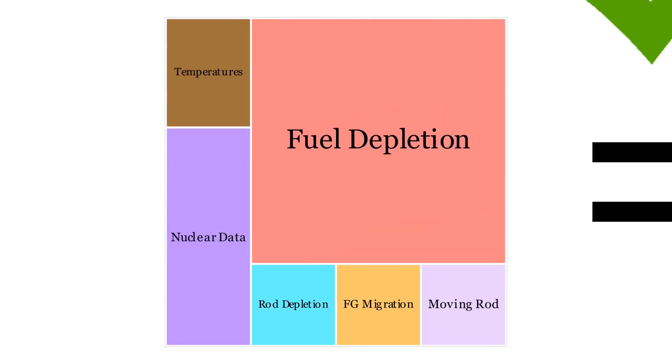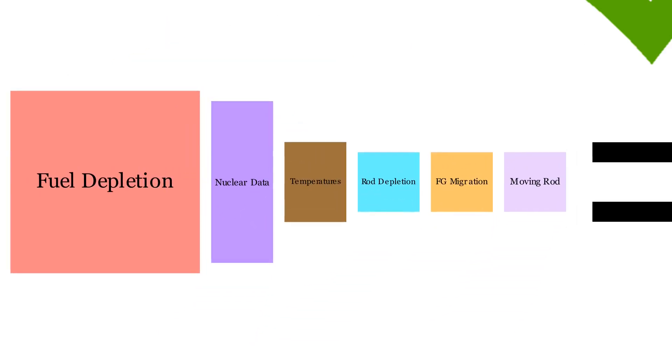So we need to go deeper by separating each phenomena influenced by the fuel depletion. For instance, how temperature changes affect the chain reaction, how much of the initial strength of the control rods has been lost, and many others.